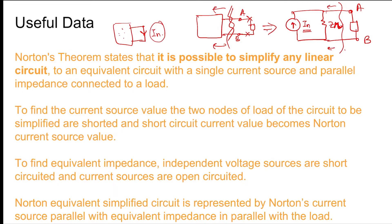To find the equivalent impedance, the voltage sources and current sources need to be replaced with their internal impedances. For ideal voltage sources, the internal impedance is zero, which means voltage sources are shorted. Current sources are open-circuited, and then you find the equivalent impedance of that portion of the network.